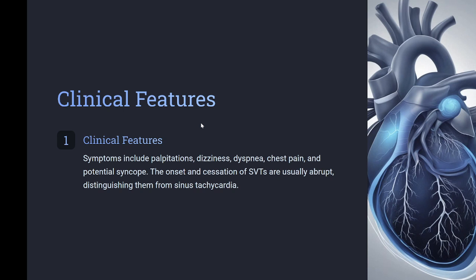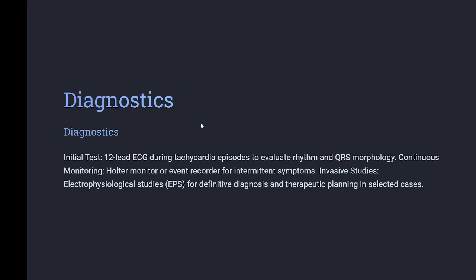Diagnostics: the initial test is a 12-lead ECG during tachycardia episodes to evaluate rhythm and QRS morphology. Continuous monitoring via Holter monitor or event recorder is used for intermittent symptoms. Invasive electrophysiological studies (EPS) are used for definitive diagnosis and therapeutic planning in selected cases.